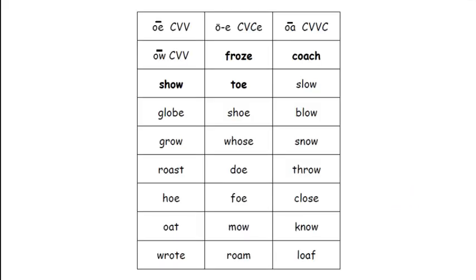Before we get started, let's read through our word list, just so we know how each of these words sounds. I'm going to start in the first column with the word show, globe, grow, roast, hoe, oat, wrote.